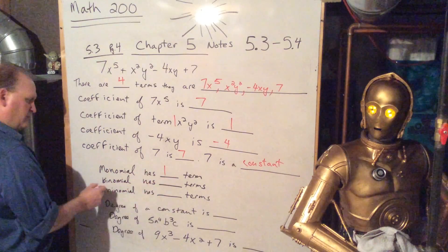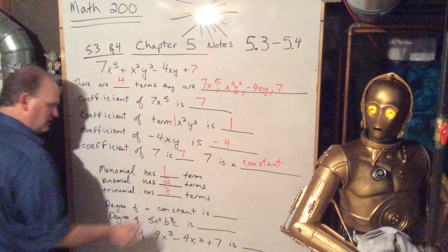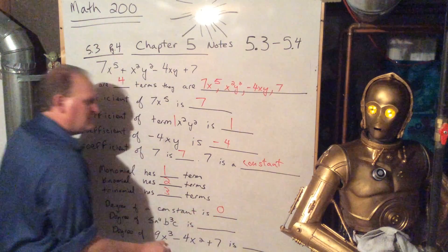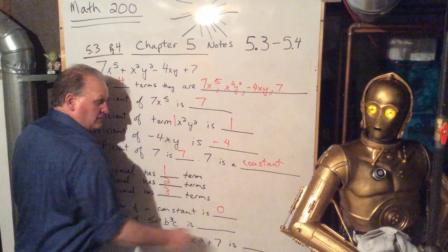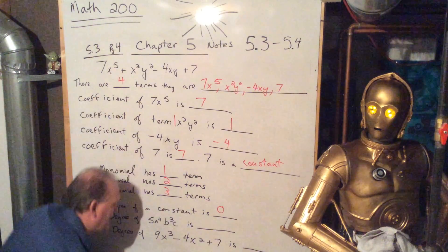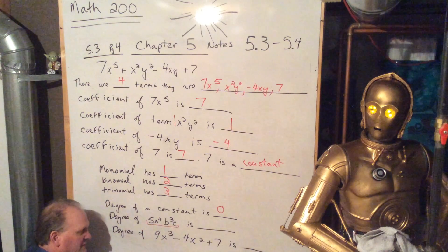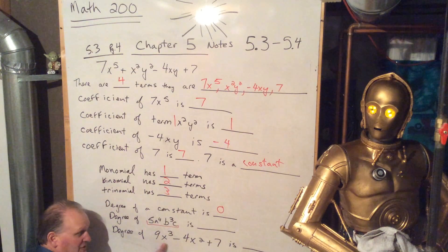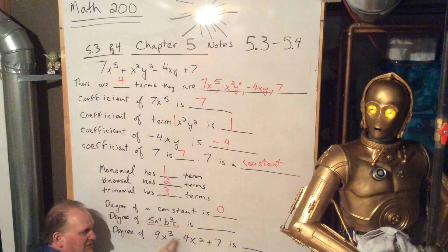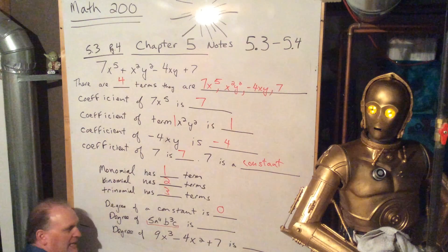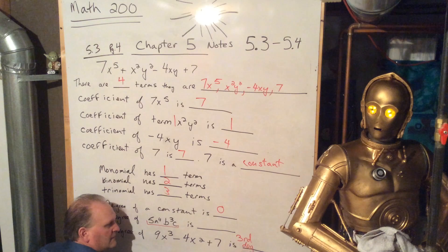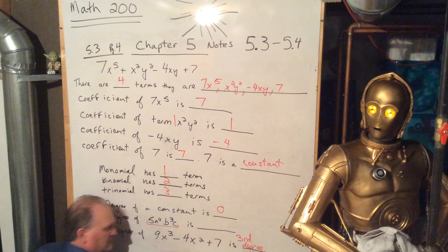Monomial has one term. Binomial has two terms. Trinomial has three terms. The degree of a constant is 0. So if I said, what's the degree of this? It's 0. It's 0 degree. Degree of this. So this is a special case. We'll come back to this one. Put a pin in that one for a second. Let's look at the degree of this trinomial. So this is a trinomial. There's a 9x to the third minus 4x squared plus 7. So we have a 3, a 2, and a 0. 3. So this is a third degree. That's a third degree trinomial is what's going on there.